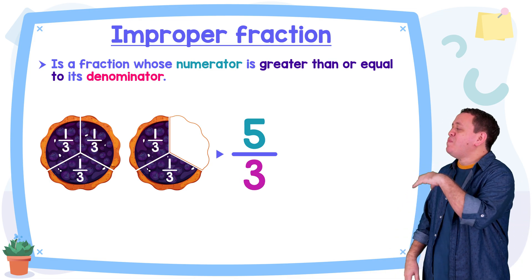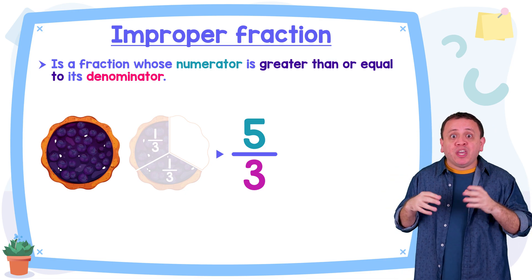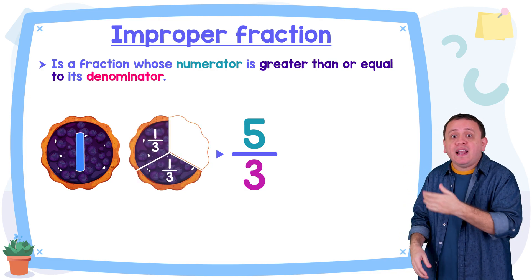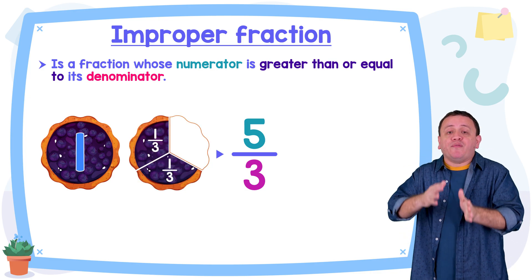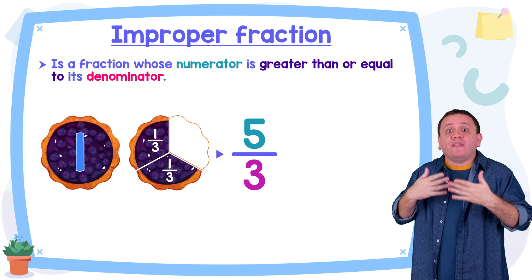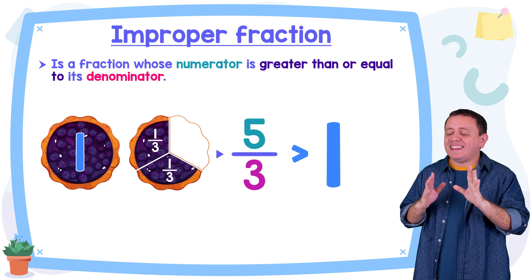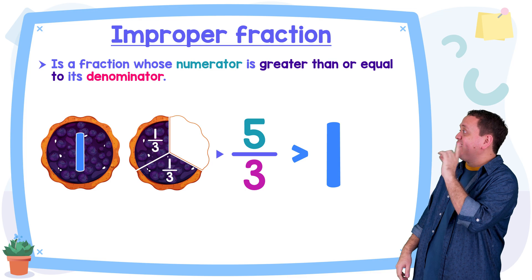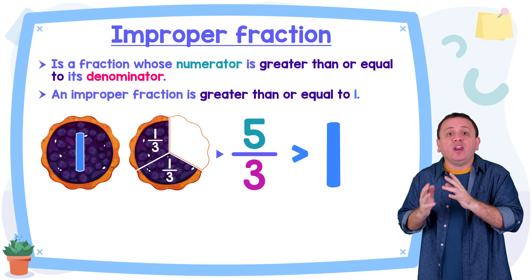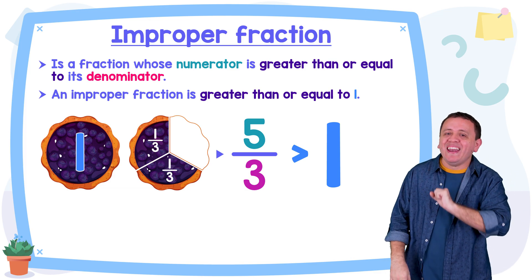But there is something else. Let's go back to the first pie. We took this pie completely — we can put the pieces together — so here we have one whole pie. But we also have a little of the second pie, so we have more than one whole. Therefore, our improper fraction five thirds is greater than one whole. This is related to another characteristic of improper fractions: an improper fraction is greater than or equal to one whole.